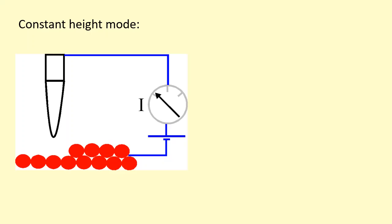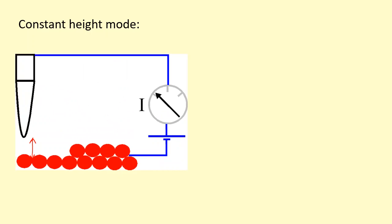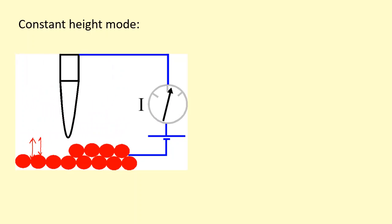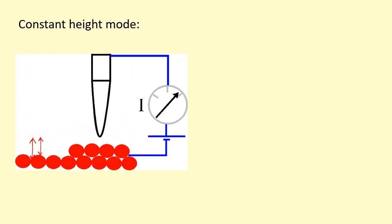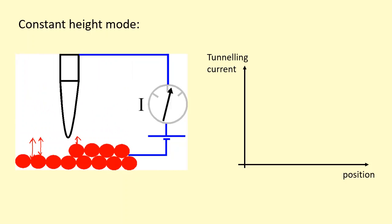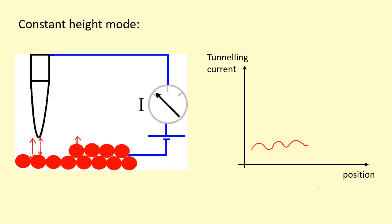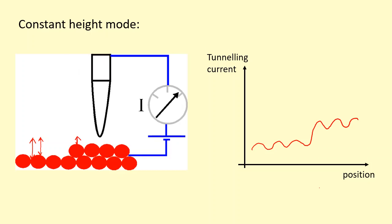The current will be smallest when the gap is biggest, because the probability of the electron tunneling across is very small. At certain points, it will increase by a small amount. The current will be largest at points where the gap size is biggest. This is used to plot a graph, and the tip can sweep back and forth as well.